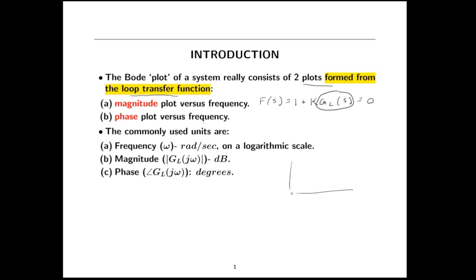Let me show a crude illustration of a Bode plot. It's the magnitude of that loop transfer function evaluated at all points s equal j omega, represented in units of decibels, versus omega in radians per second. The second plot below it is the phase of the loop transfer function at all points s equal j omega versus omega in radians per second, and the units used there are degrees.